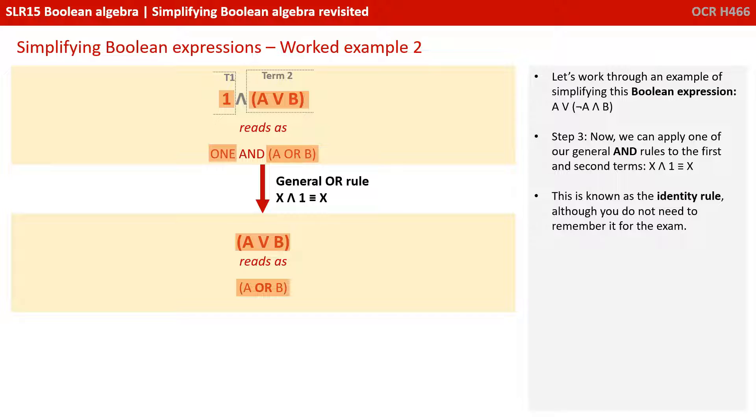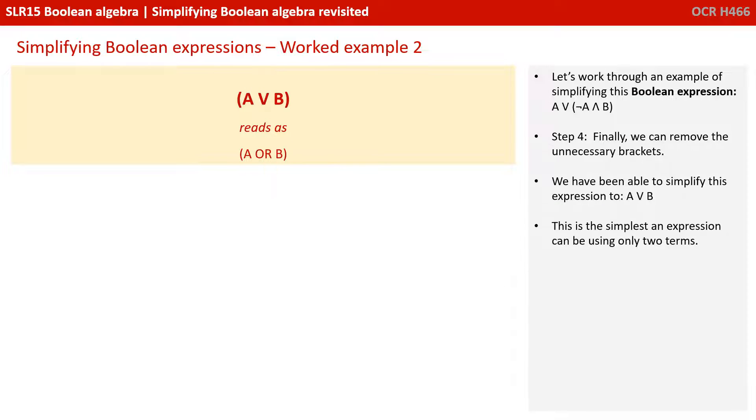Step three: Now we can apply one of our general AND rules to the first and second terms, which is X AND 1 equals X. Finally, in step four, we can remove the necessary brackets. We've been able to simplify this expression to A OR B. And this is the simplest an expression can be using only two terms.